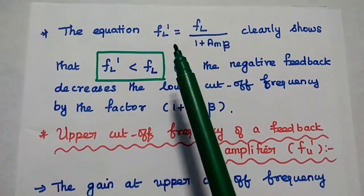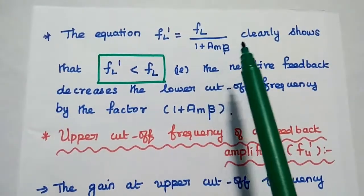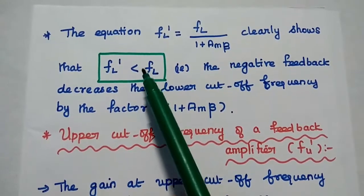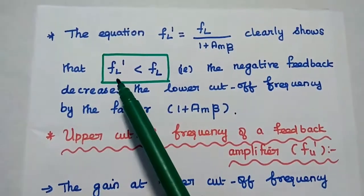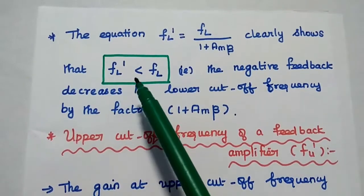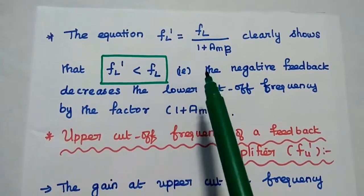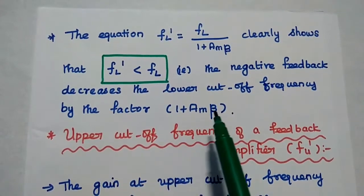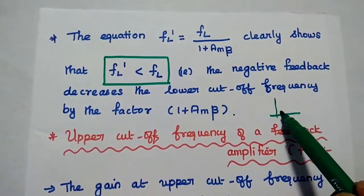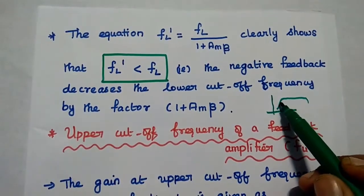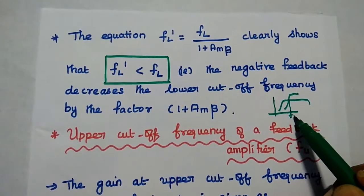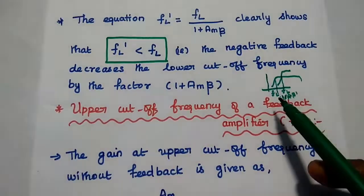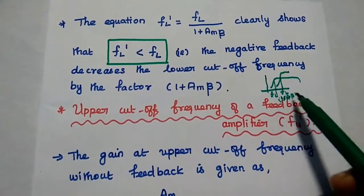The equation FL_dash = FL / (1 + AM·β) clearly shows that FL_dash is always less than FL. Here FL is the lower cutoff frequency without feedback, and FL_dash is the lower cutoff frequency with feedback. With feedback, the lower cutoff frequency is decreased — that means negative feedback decreases the lower cutoff frequency by the factor (1 + AM·β). In the frequency response diagram, the lower cutoff frequency for the feedback amplifier FL_dash is shifted lower by this factor.